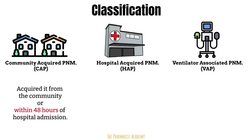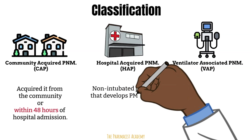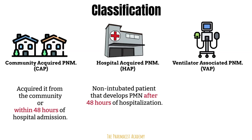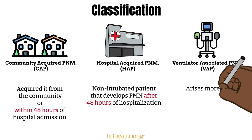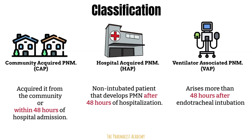For hospital acquired, or HAP, it occurs in a non-intubated patient and develops after 48 hours of hospitalization. A patient has been in the hospital for more than 48 hours, signs and symptoms of pneumonia develop, and the patient is diagnosed with pneumonia — it will be known as HAP. Lastly, we have ventilator associated pneumonia, or VAP, which arises more than 48 hours after endotracheal intubation. HAP and VAP are generally more severe than CAP because of more resistant pathogens.